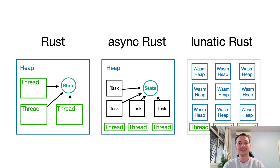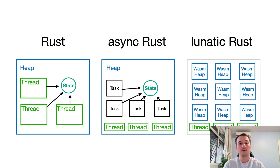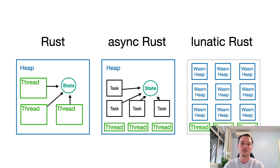If an async task leaks some memory and we shut off the task, the leaked memory is still there — we cannot get rid of it, it lives inside the same heap. In Lunatic and Erlang, if we drop the process, we clear the whole heap. So we get rid of all leaked memory and can restart from a fresh new state just for this particular process. We have the guarantee that the failure is not escaping the scope of a process, so we can limit the propagation of failure in the system.